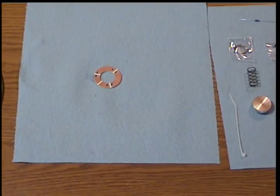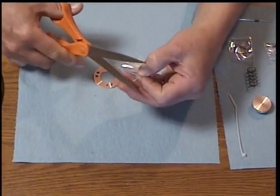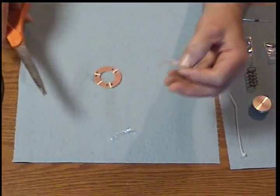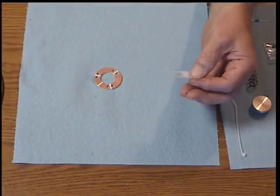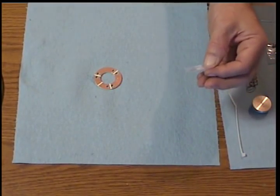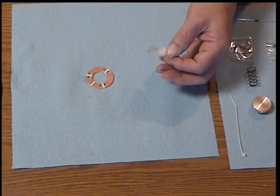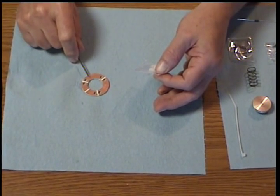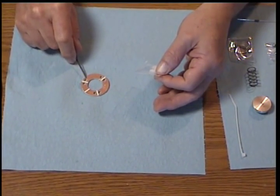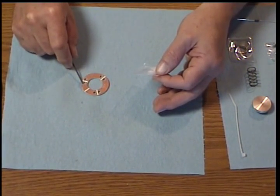We'll then open the container of flux. And what we want to do is apply flux on the printed circuit board just to this side of each hole.